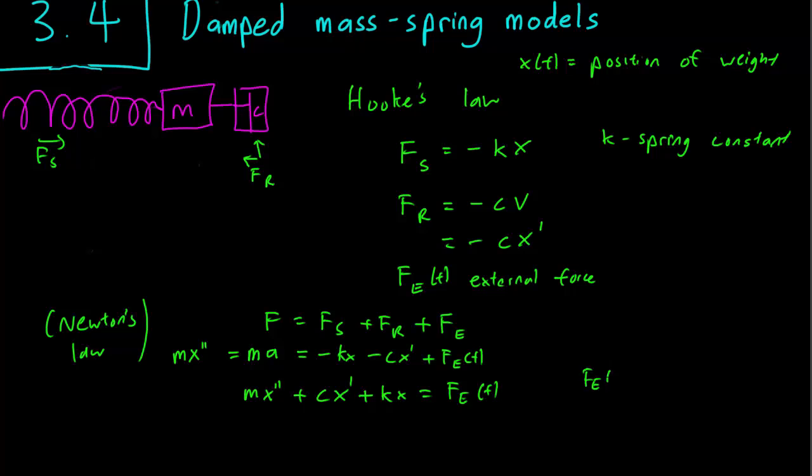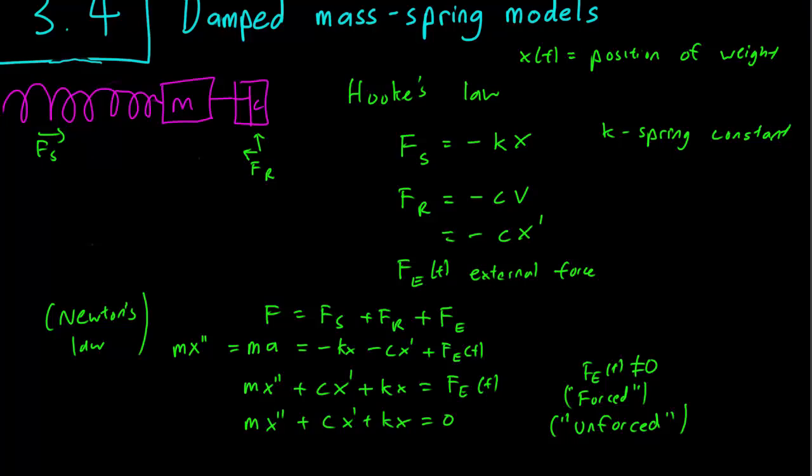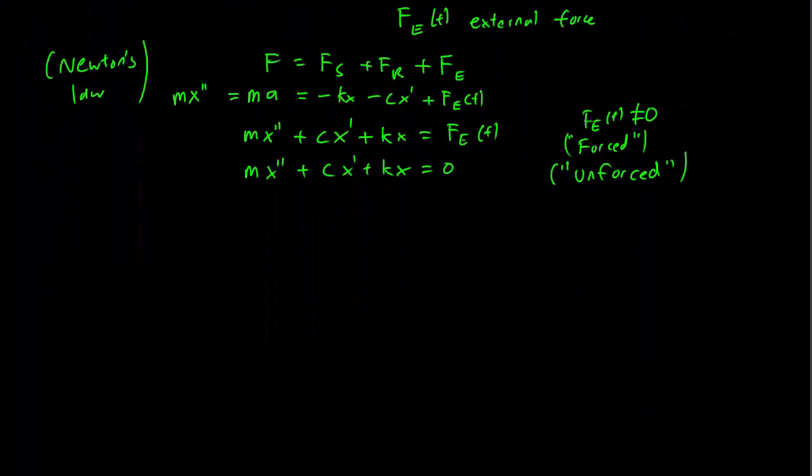So if this external force is non-zero, we have a non-homogeneous equation. And we call this the forced situation. When we have an external force acting on the spring system. But usually we don't, so we usually just have to deal with a homogeneous equation here. So this is a very natural application of the things we learned in the last section. So let's talk a bit about what possible behaviors a spring can have.